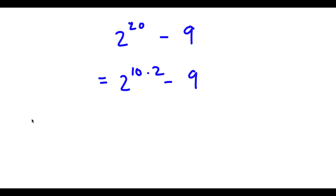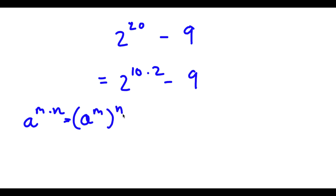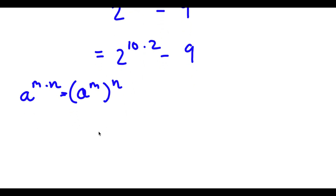Now if I have something in the form a to the power of m times n, this can be written as a to the power of m to the power of n. So 2 to the power of 10 times 2 can be written as 2 to the power of 10 to the power of 2.